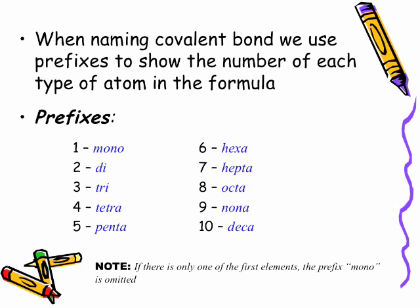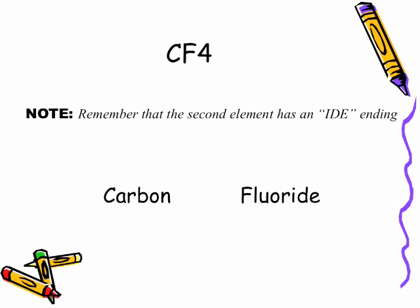Now, here's an important note. If there is only one of the first elements, the prefix mono is omitted. So we're not going to use mono with this, mono that, as you'll probably come across the occasional time that we'll use it. We're not really going to use it, but for you to know, if you do see it, you do use mono at some occasions, and we'll see that as some of the worksheets I'll be handing out. So let's look at the first one.